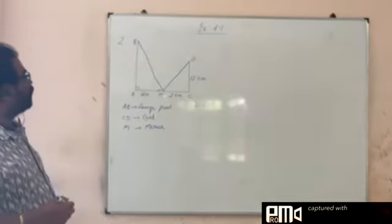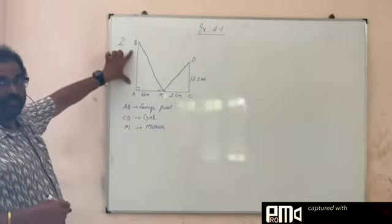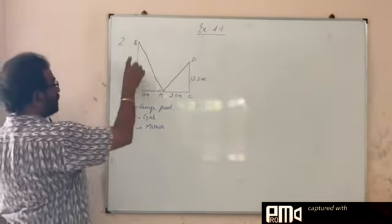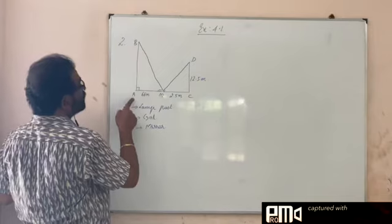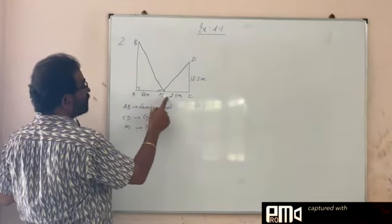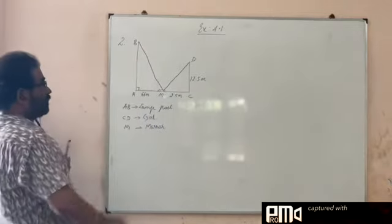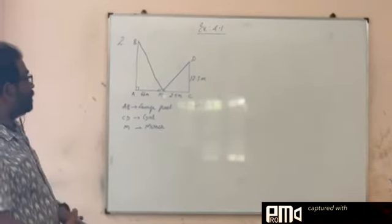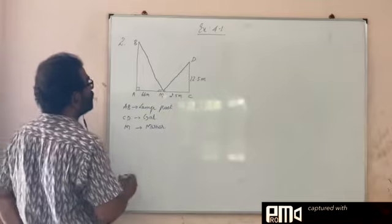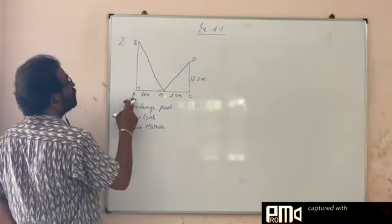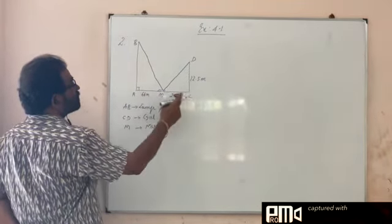We are going to find out the height of the lamppost. Distance between the lamppost and the mirror are given, mirror and the girl are given, height of the girl is also given. Now, first of all, we prove these two triangles are similar.